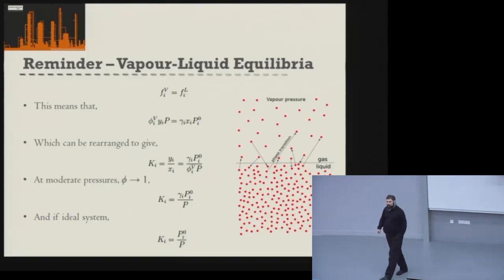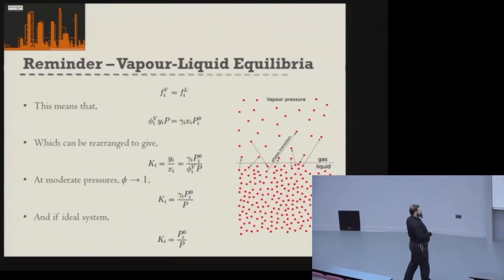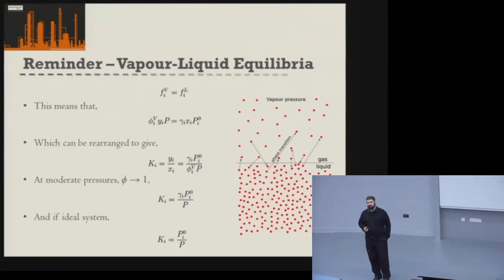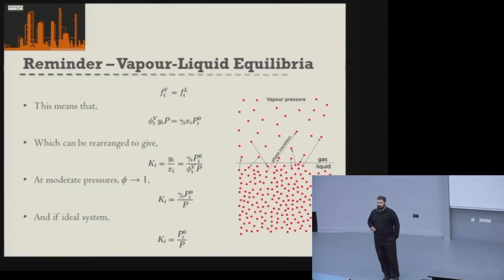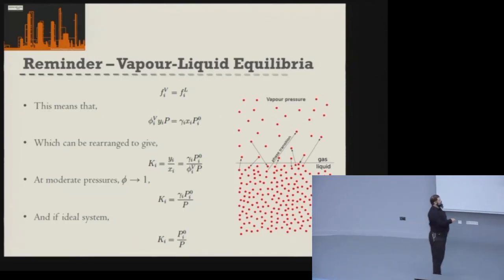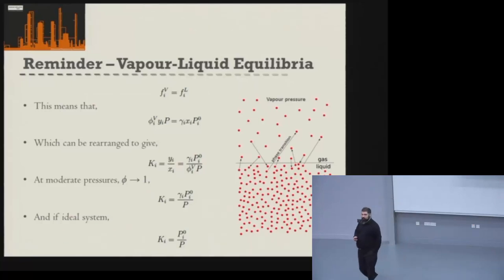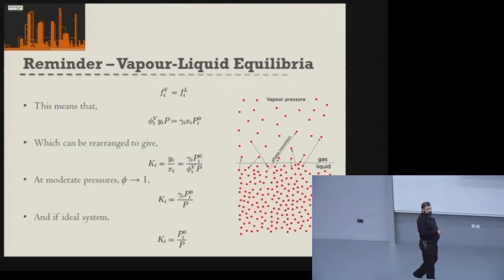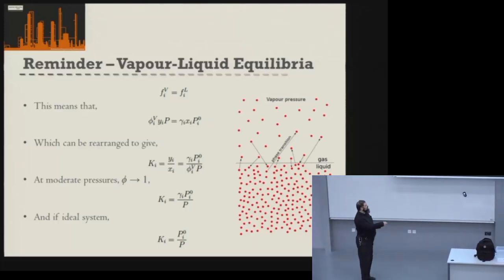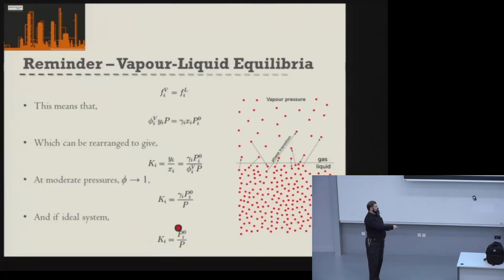For moderate pressures within our system — generally less than about 8 bar — the fugacity coefficient is approximately equal to 1. So for most systems we're interested in, we can remove that from our expression for K. And if we're assuming an ideal system, we can also say the activity coefficient equals 1, simplifying K to just the ratio of saturated vapor pressure to total pressure.